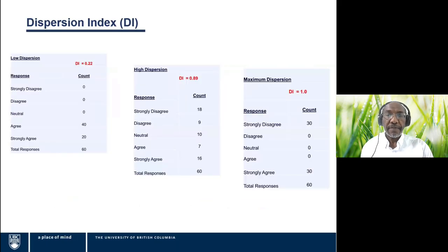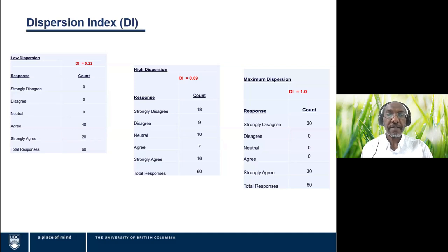These three examples show that the calculation of the dispersion index does not involve the numerical values one through five for the categories — it simply looks at where the responses are, which is why it's suitable for this type of categorical data. In example one on the left, the majority agreed and the remaining students are in the next category, resulting in a low dispersion of 0.22. The middle example shows responses spread across all categories, resulting in a high dispersion of almost 0.9. The third extreme example shows a dispersion index of one, where 30 respondents strongly disagreed and 30 strongly agreed.